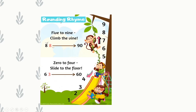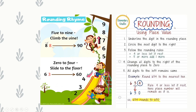Next, let us learn the rounding concept with the help of a rhyme: '5 to 9, climb the vine; 0 to 4, slide to the floor.' If the number lies between 5 to 9, we round upwards. If the number lies between 0 to 4, we round downwards. For example, 88: the digit 8 lies between 5 to 9, so we climb upwards — 88 rounded is 90. For 63: the digit 3 lies between 0 to 4, so we slide downwards — 63 rounded is 60.